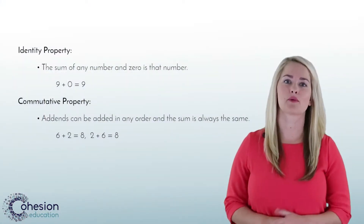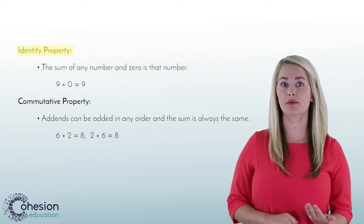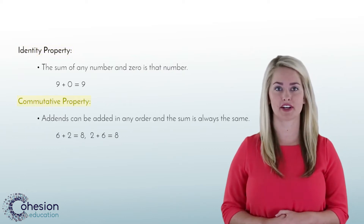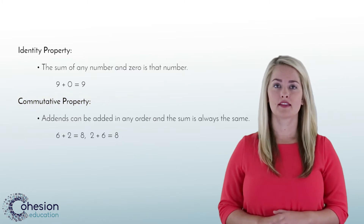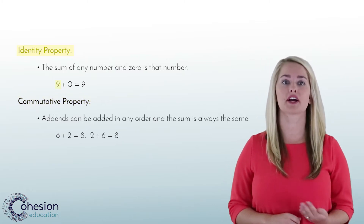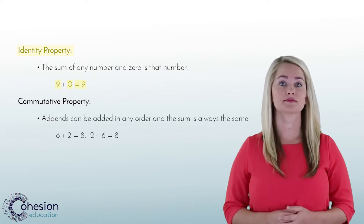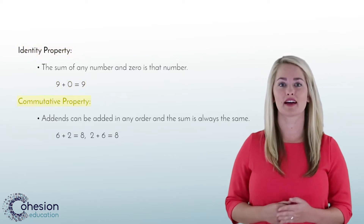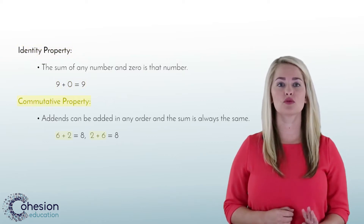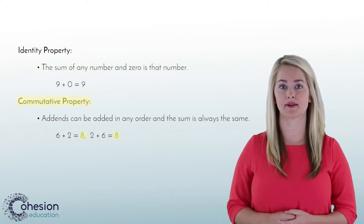The two properties that we will take a look at are the identity property of addition and the commutative property of addition. The identity property states that the sum of any number and zero is that number. The commutative property states that students can add two or more numbers in any order and get the same sum.